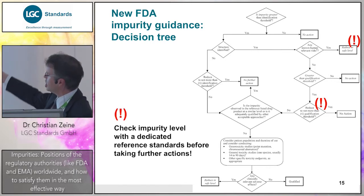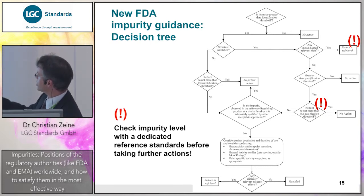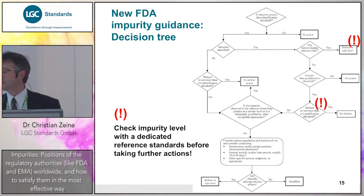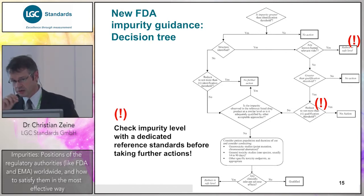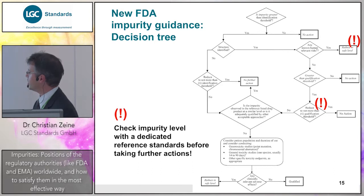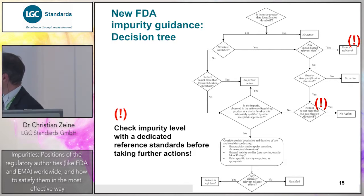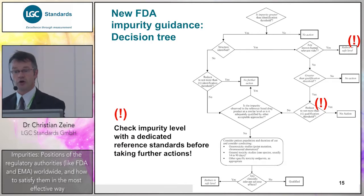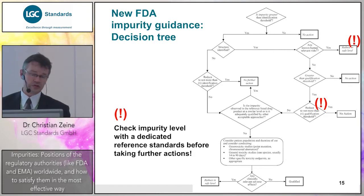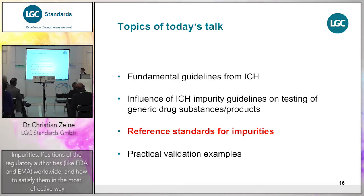If an impurity is not specified in any compendium, the FDA says to use their decision tree provided with the guidance. I want to highlight two sections in that decision tree where, instead of assuming the same analytical response between the API and all impurities, you should use a dedicated reference standard to check whether you are really above the qualification threshold or safe level — before physically reducing that impurity. A small investment in a reference standard and some analytical work might save you from purifying the API or changing the drug substance supplier or synthesis route.